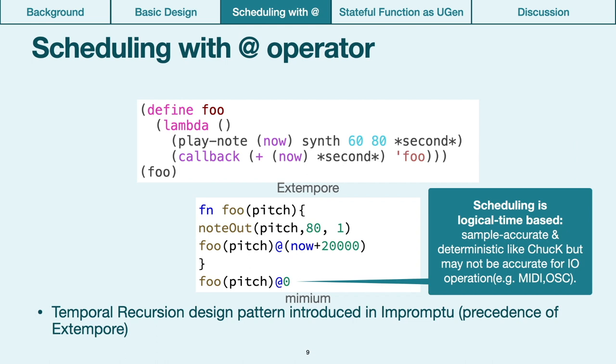Next, we will explain the two characteristic language features of Mimium. The first one is the semantics for task scheduling. We use the design pattern called temporal recursion, introduced by Sorensen, the developer of Extempore, to describe temporal discrete control. Temporal recursion is a design pattern that uses recursive function which calls itself with a certain delay time. To enable it, Mimium uses a special operator @.